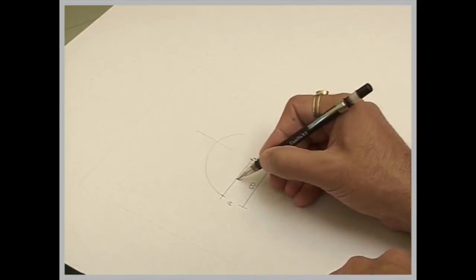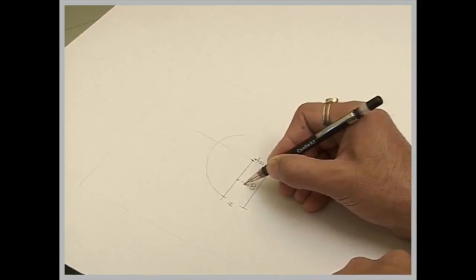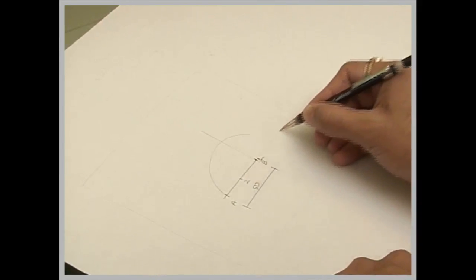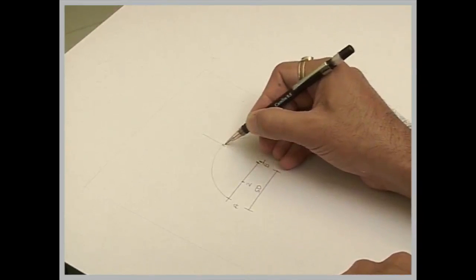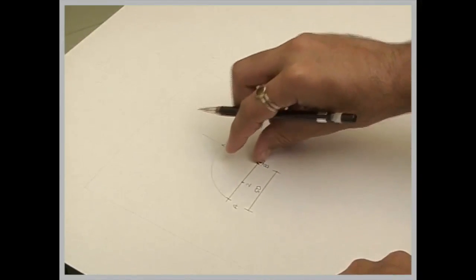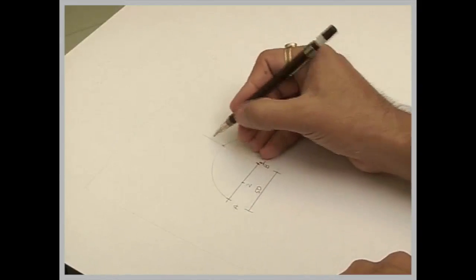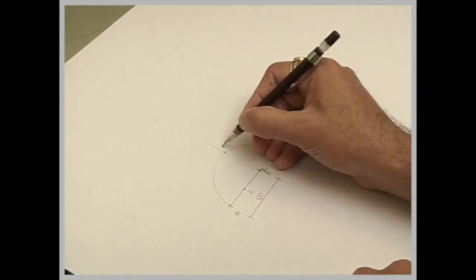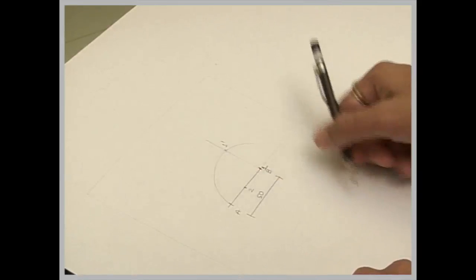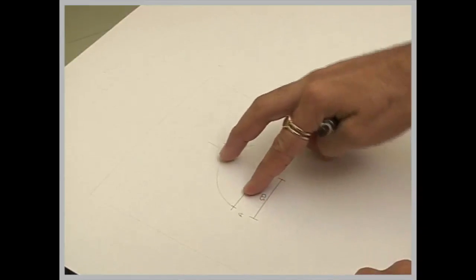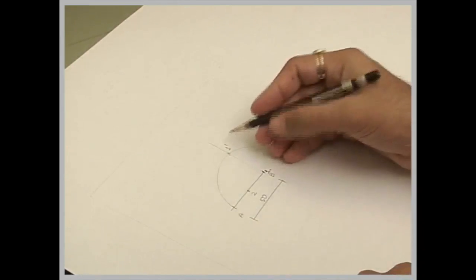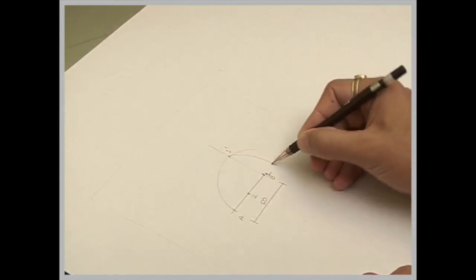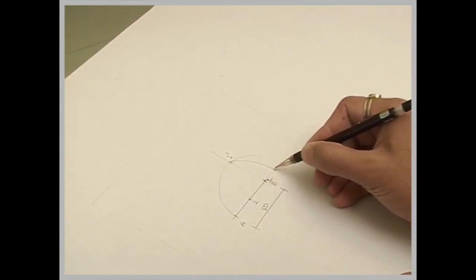Then I will take the midpoint of A and B and mark it as 2. From 2 to the point where the first arc intersects with the vertical line, I will mark as 1'. Now I will take 2 to 1' and draw another arc. Wherever it cuts the horizontal line will be 2'.